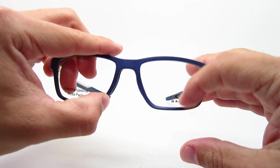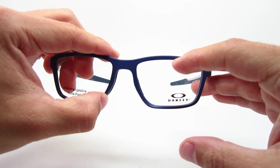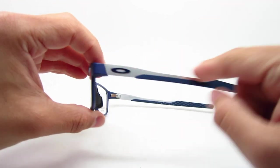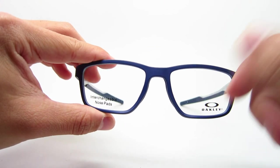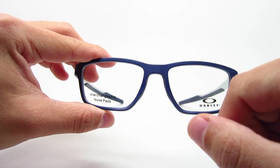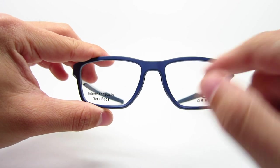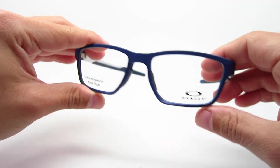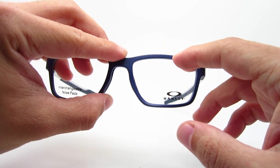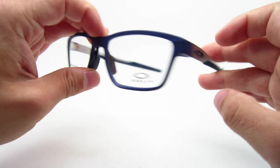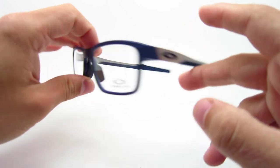It's going to be 35.1mm lens height and 136mm temple length. And with the larger size, the 55 size, it's going to be 55mm lens width, same bridge 17mm. The lens height is going to be like an extra millimeter longer, it's 36.4mm. And same temple length, 136mm.